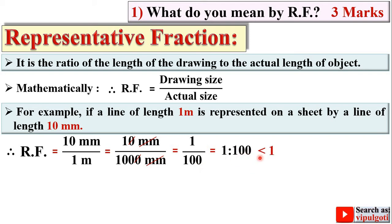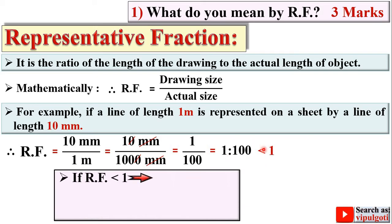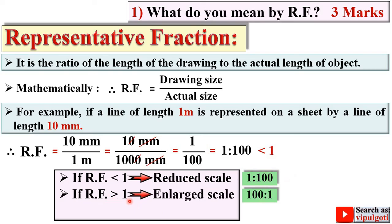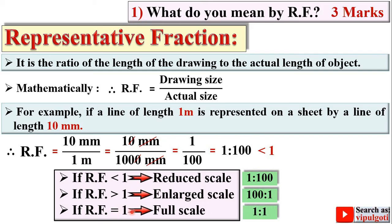Look at this RF carefully — it is less than 1. Based on that, if RF is less than 1 you can say it is a reduced scale, for example 1:100, 1:1000, 1:2, 1:3, etc. If RF is greater than 1, then it is an enlarged scale, like 100:1 or 2:1. If RF is equal to 1, it is full scale, meaning 1:1 — the drawing size is exactly equal to the actual size of the object. This is a brief introduction to representative fraction.